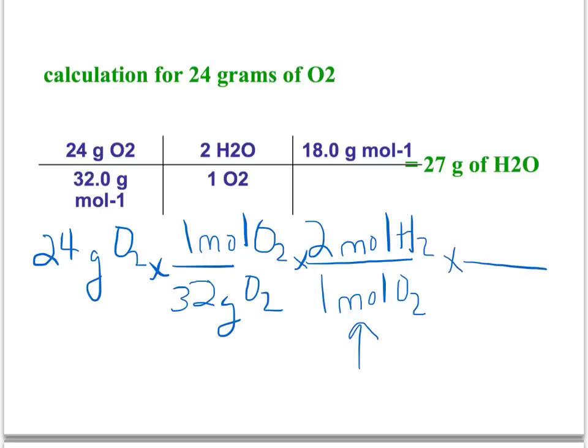And the final step is just change moles of hydrogen to grams. So we'll say one mole of hydrogen has a mass of two grams of hydrogen.